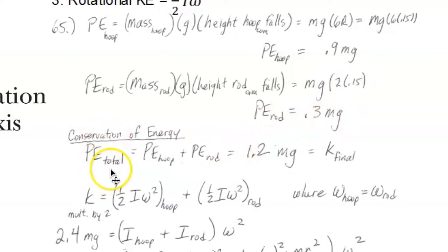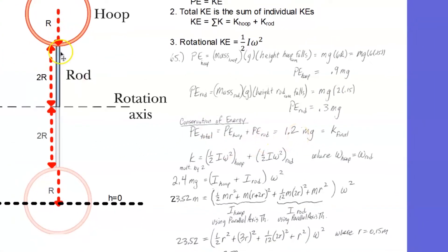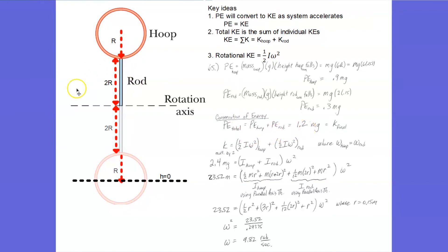So my total potential energy then is the sum of those two, 1.2 mg, and that's the potential energy up here. As it falls, that all converts to kinetic energy down here.